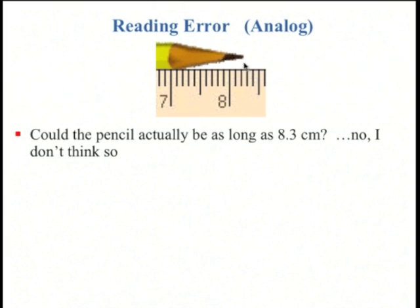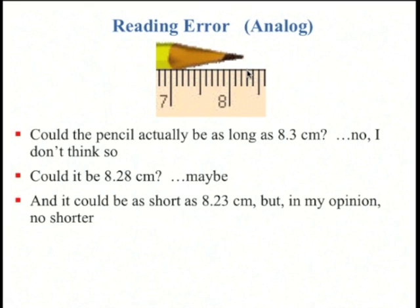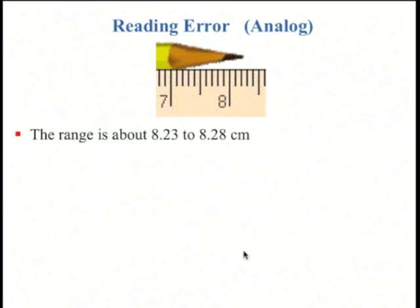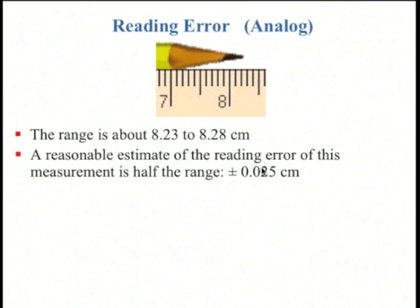My reasoning goes something like this. Could this pencil be as long as 8.3? Well, no, it looks like it's definitely shorter than 8.3. So my maximum I would be willing to go to might be about 8.28 or something. And what's the minimum? Well, it could be less than 8.25, maybe down to 8.23, but I don't think probably shorter than that. So I have some range, 8.23 to 8.28. A reasonable estimate of the reading error is half the range where you wouldn't be able to tell the difference. So half of that range, you subtract this, divide by 2, you get 0.025 cm.